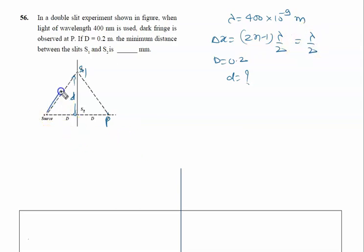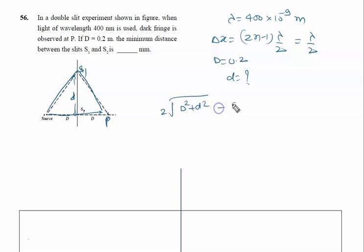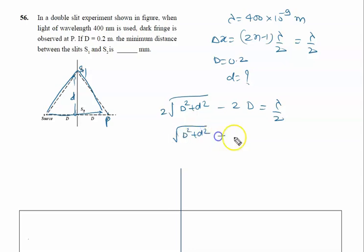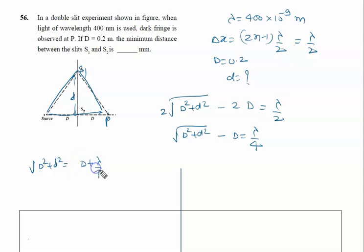The first light wave travels one path and the second wave travels another path, so the net path difference involves the hypotenuse. We write: 2√(D² + d²) − 2D = λ/2. Taking 2 as common: √(D² + d²) − D = λ/4. Rearranging: √(D² + d²) = D + λ/4.